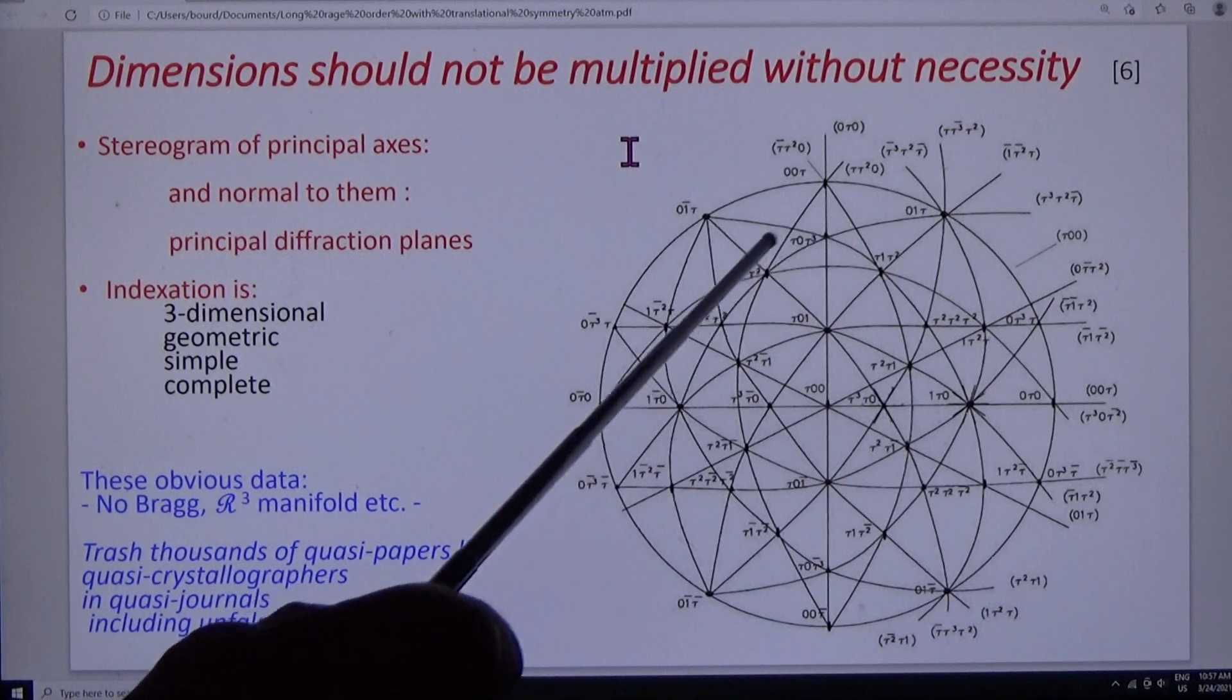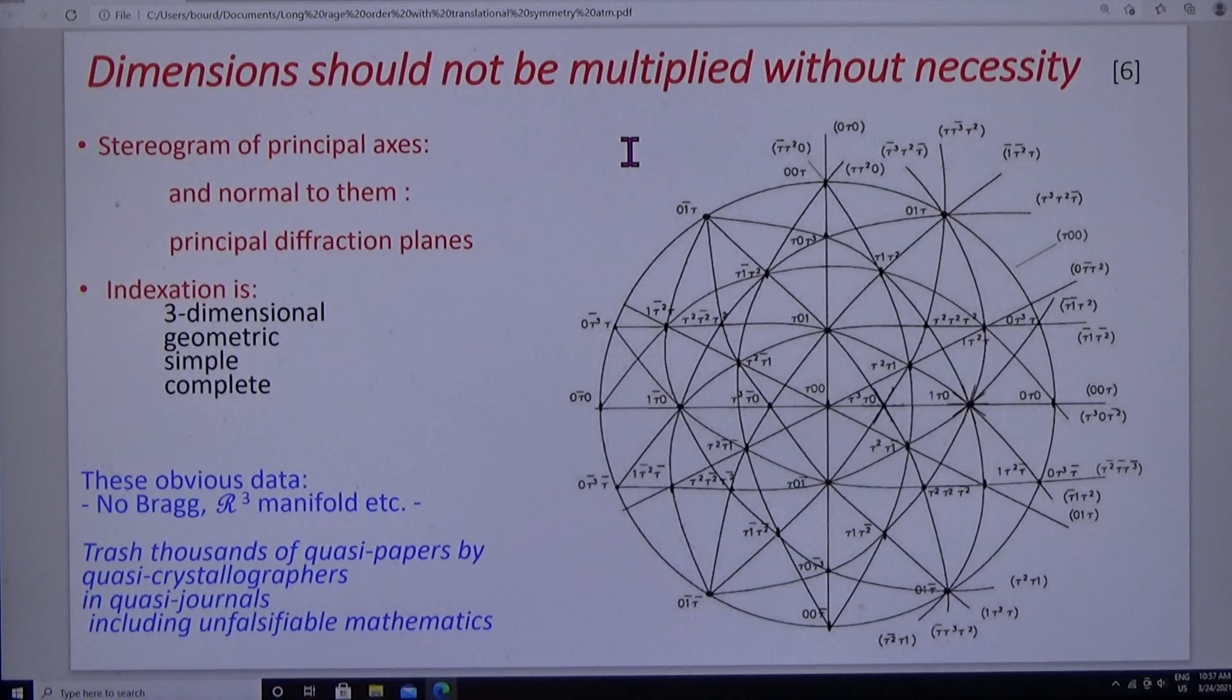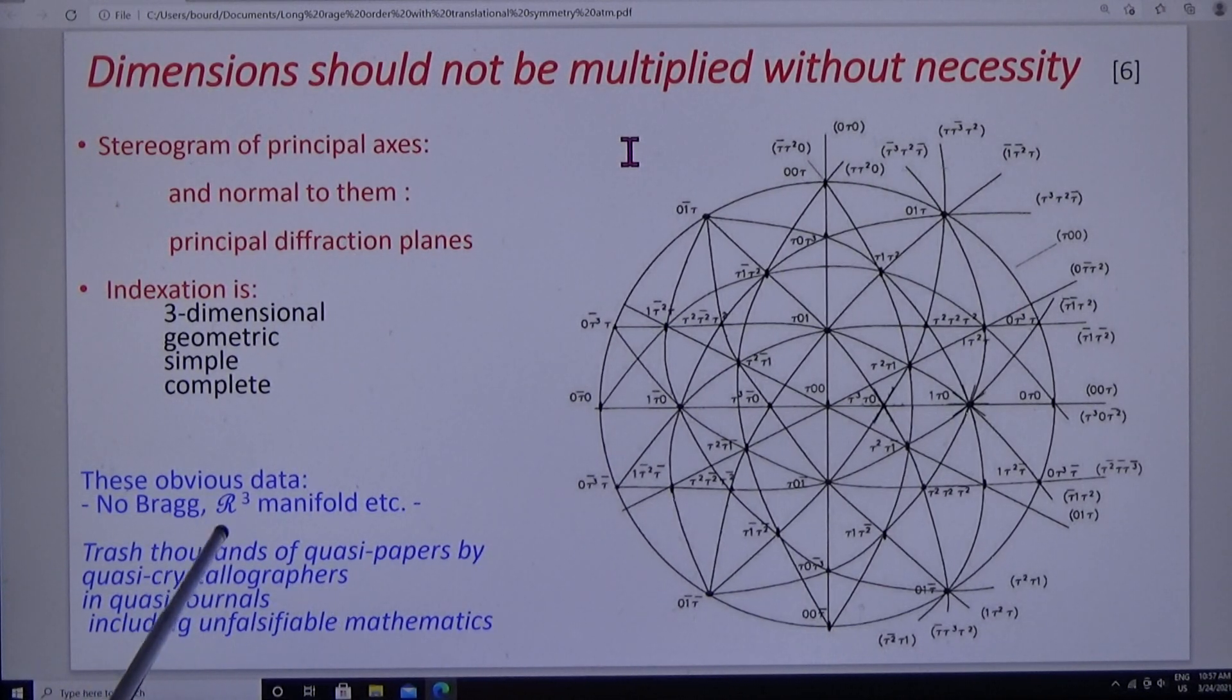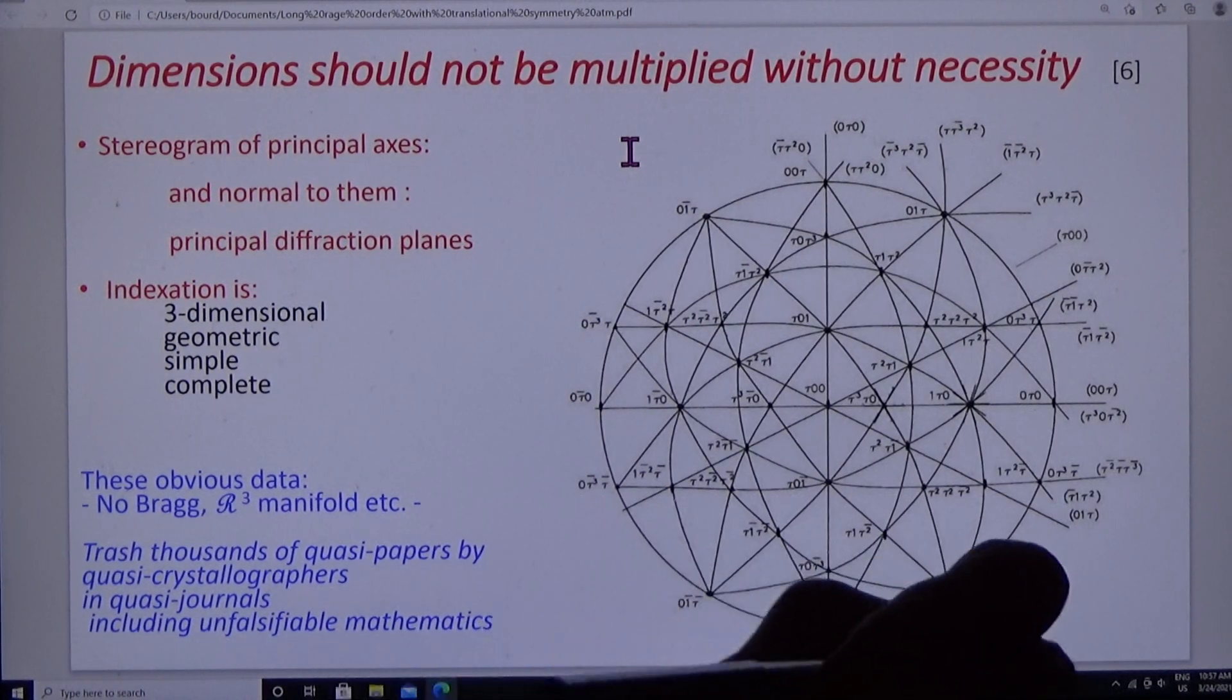They are all three-dimensional, geometric, simple and complete. Dimensions should not be multiplied without necessity. The manifold is clearly R3. There's no Bragg diffraction.